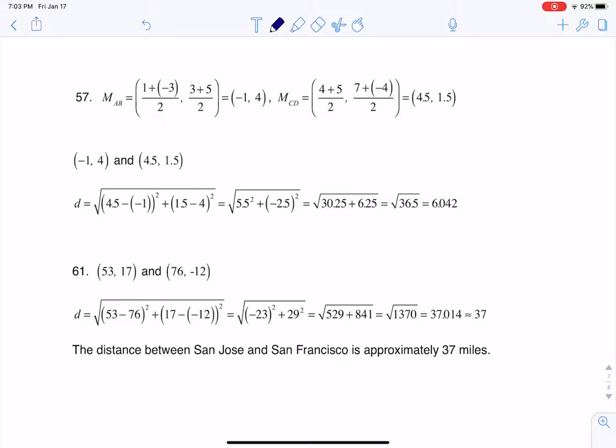So let me just write down that the points we were given in the previous problem were point A at 1, 3, point B at negative 3, 5, and then we had C over here at 4, 7, and D at 5, negative 4.